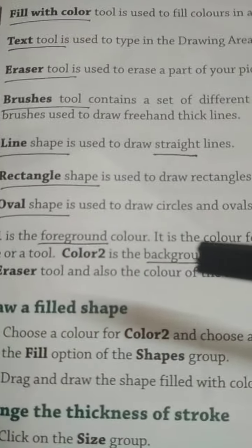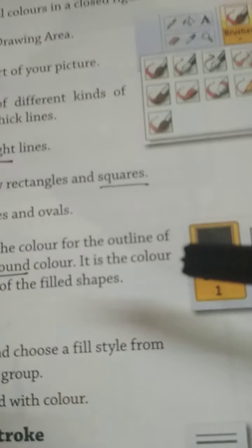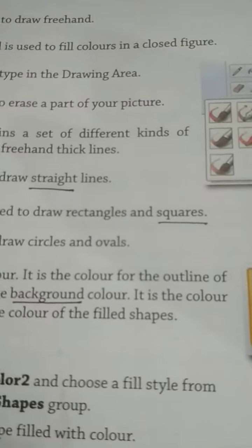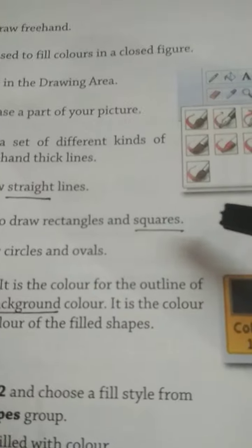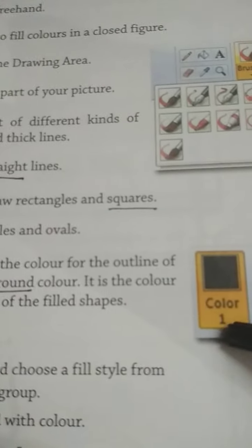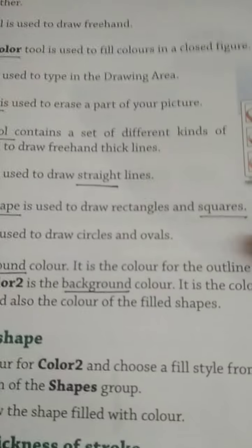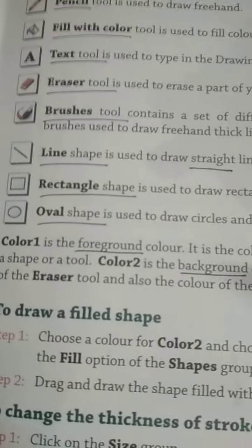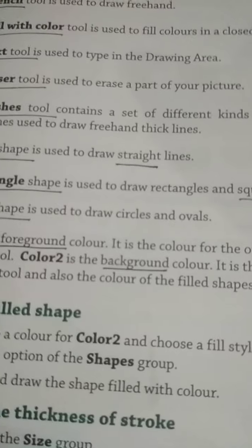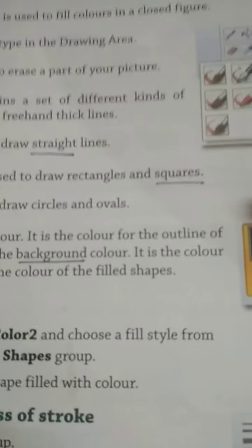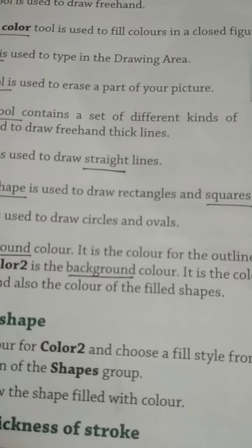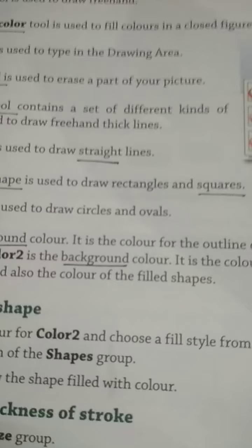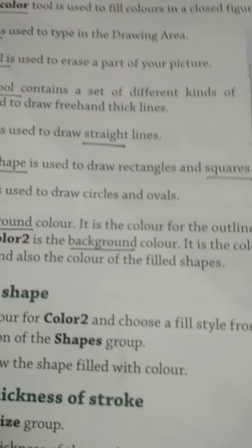Color 1 is the foreground color — it is the color for the outline of a shape or tool. Jab bhi aap koi drawing banate hain, jaise square banate hain, toh jis ka outline hota hai, woh color 1 ka hi color hota hai. Color 2 is the background color — it is the color of the eraser tool and also the color of the filled shape. Agar aapne square banaya hai, toh shape ke andar bhi yahi color rahega.